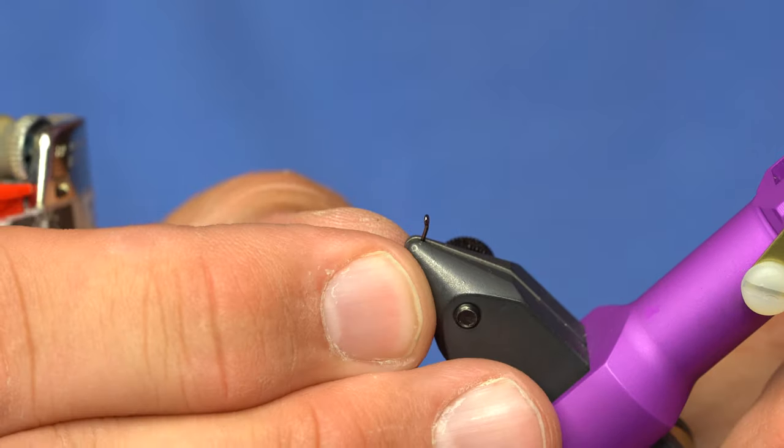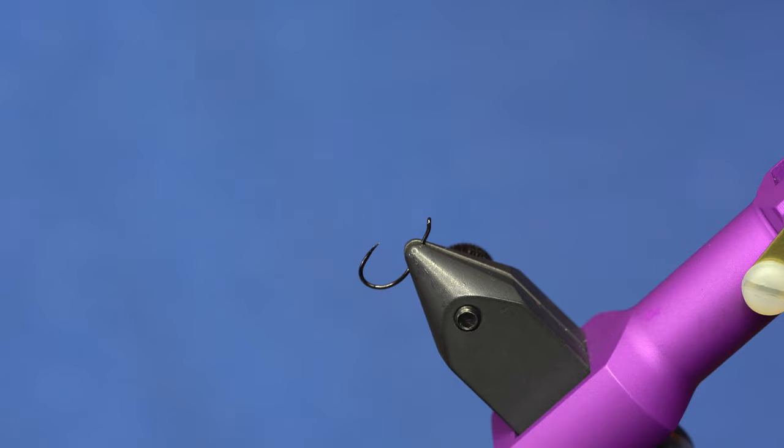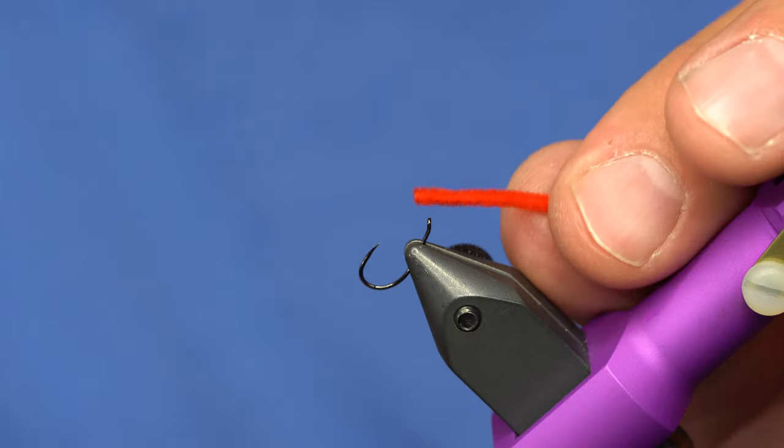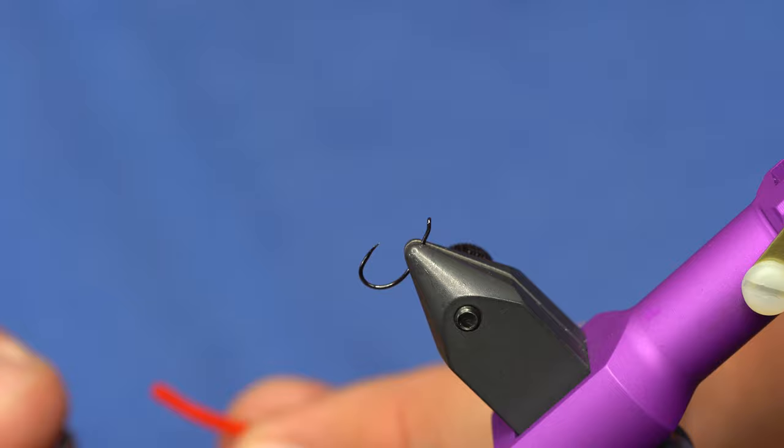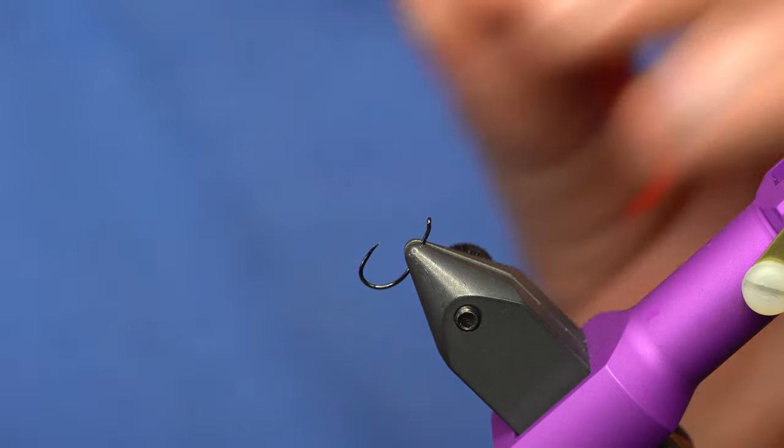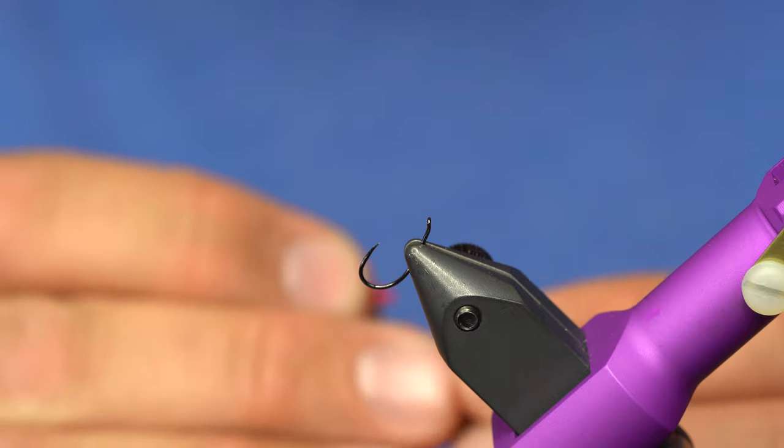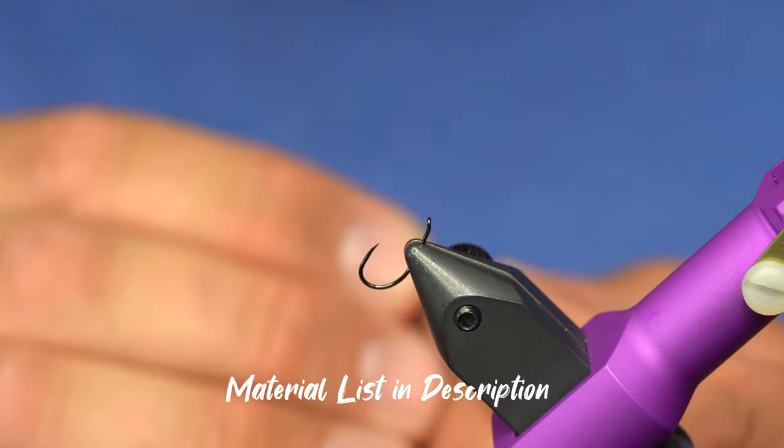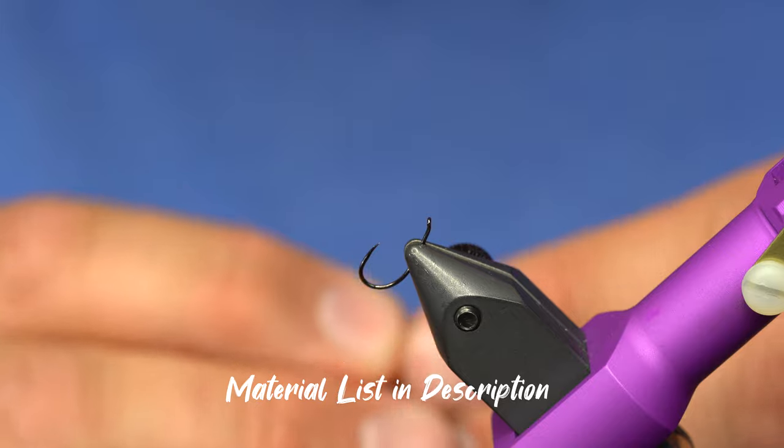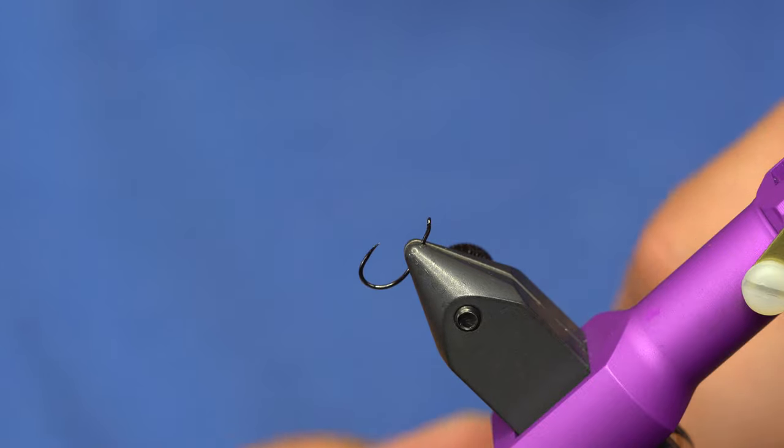So as you can see, I've got a hook in the vise that is upside down. I'm going to thread this piece of Ultra Chenille on the bead before I tie it in. The way I do that is I just singe the end of this chenille and just poke it through the bead. Just like that, and then you can pull it through.